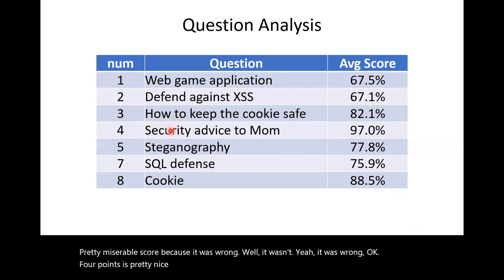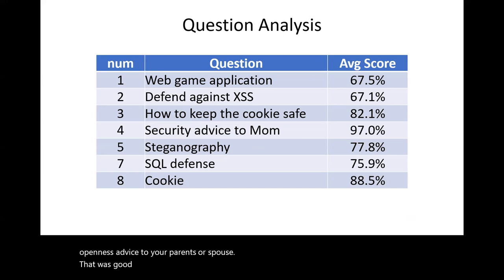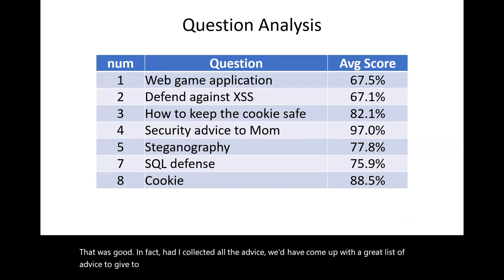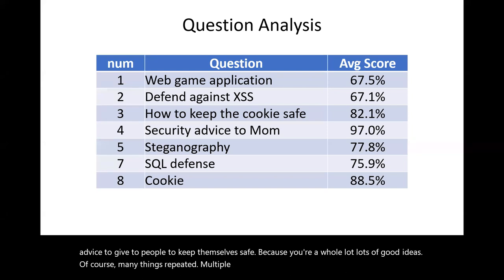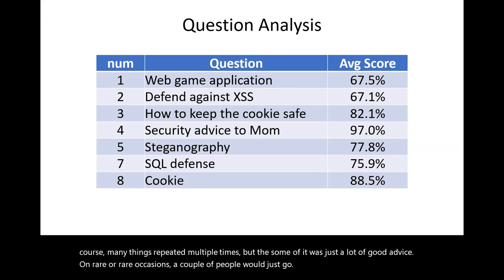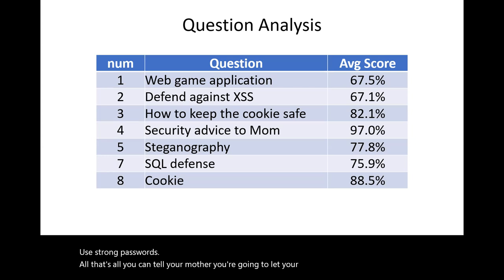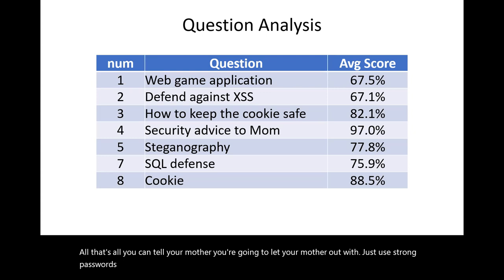People who copied and pasted from ChatGPT got about a 4 out of 10 — pretty miserable, because it was wrong. The question asking for advice to your parents or spouse was good — collectively the class came up with a great list of advice to keep people safe. A couple of people just wrote 'use strong passwords' — that's all. You're going to let your mother out with just 'use strong passwords'? So I gave a reduced grade.